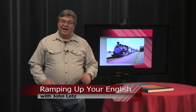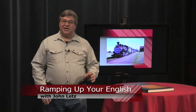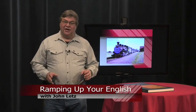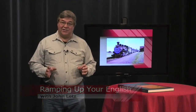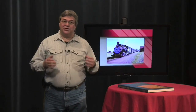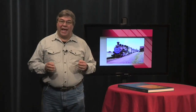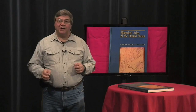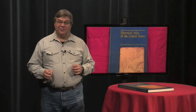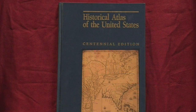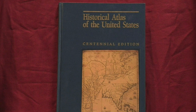This is a Ramping Up Your English book review. An atlas is a collection of maps. A historic atlas is a collection of maps, photos, and illustrations that tells the reader about what happened in the past and where things happened. For the reader learning about the history of railroads, I recommend National Geographic's Historical Atlas of the United States.